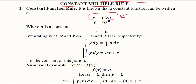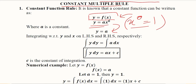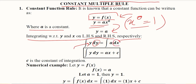The constant function rule states that if we are given a function y in terms of x, a constant function will look like y = ax^0. Since x raised to the power 0 is equal to 1, it is actually equal to a, where a is a constant. Now if we integrate both sides with respect to their variables — dy on the left and dx on the right — we apply the integral sign on both sides.